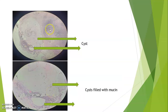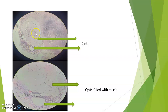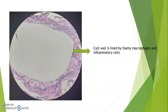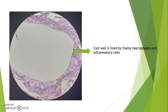These microphotographs show a low-power view of the appendix wall. On the serosal surface, two cysts are visible — one larger, one smaller — representing mucus retention cysts. The cysts are filled with mucin and some inflammatory cells. The higher-power view of the cyst wall shows it is lined by macrophages and chronic inflammatory infiltrate, indicating the mucosal lining has been completely effaced or destroyed by the mucin.